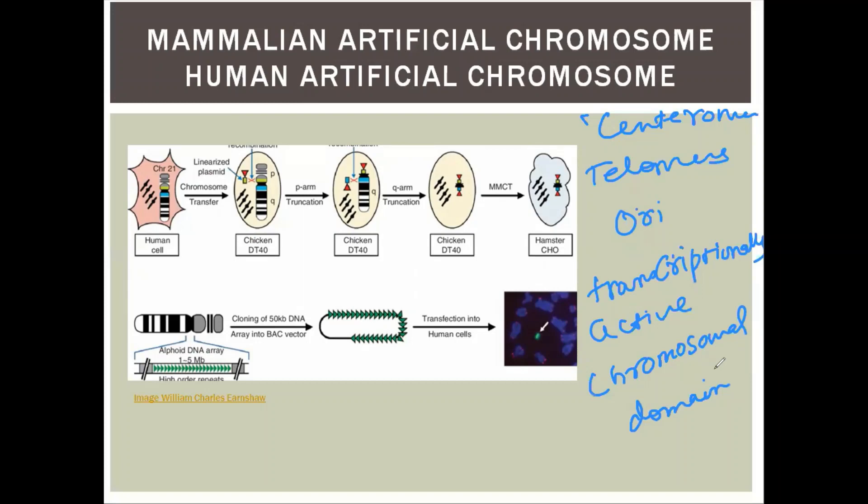The MAC or HAC is created through artificial synthesis, studying and recreating natural chromosome structure in the laboratory using a particular synthetic array.